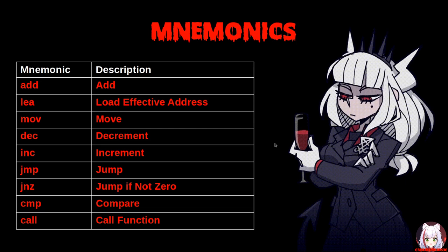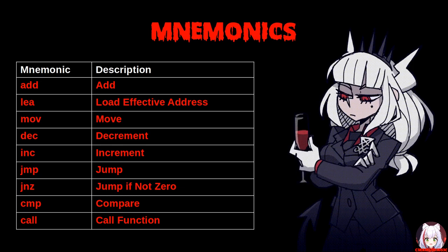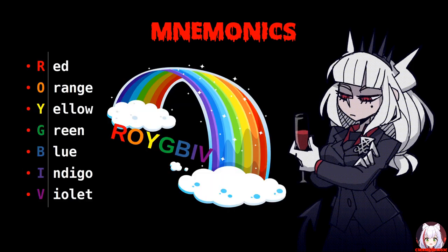Mnemonics are memory devices that help learners recall larger pieces of information, especially in the form of lists like characters, steps, stages, or parts. In programming, a mnemonic is a name assigned to a machine function, or an abbreviation for an operation. Each mnemonic represents a low-level machine instruction in assembly, making machine code easier to read and write for humans. A mnemonic is similar to how you learned ROYGBIV in school.